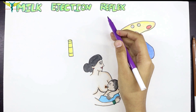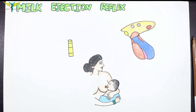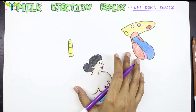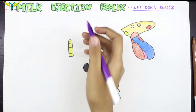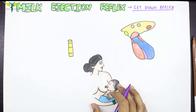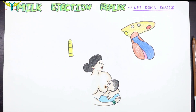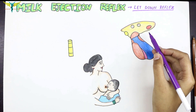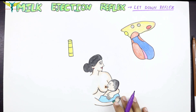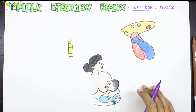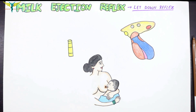The milk ejection reflex is also called the let down reflex. In simple words, this reflex is caused by the infant while sucking at the breast — the tiny nerves in the nipple get triggered. This triggering goes into the spinal cord, then to the hypothalamic nuclei, causing a rise in oxytocin that further causes the push out or let down of the milk in the breasts. Let's learn the in-depth physiology of this reflex.